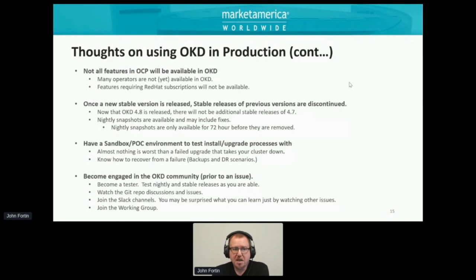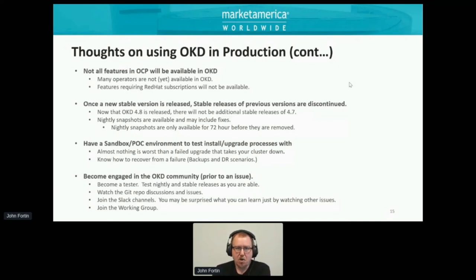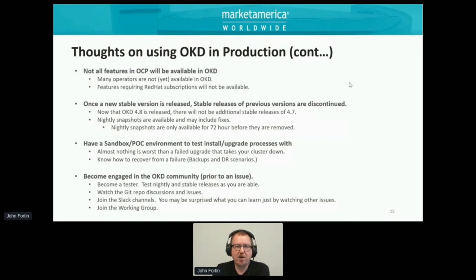For instance, Istio service mesh is very intrusive into the networking of OKD. You may not want to install it initially in your production environment — you want someplace where you can test it safely, uninstall it, reinstall it, reconfigure it, break it, and recover without affecting the rest of your clusters.